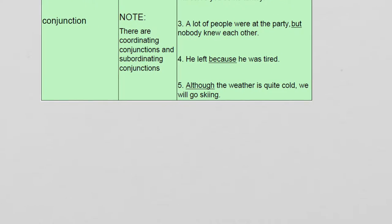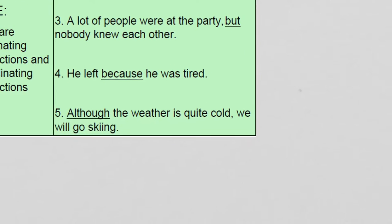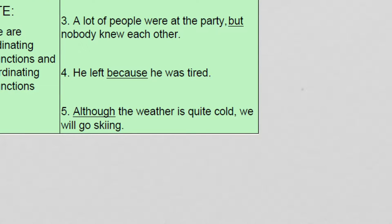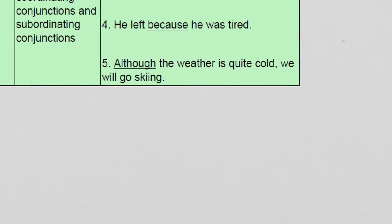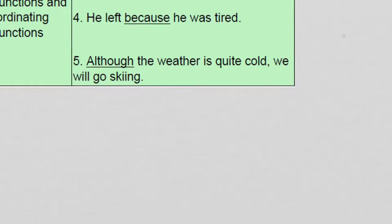Something to note about conjunctions is that there are coordinating conjunctions and there are subordinating conjunctions. Sentence three is another coordinating conjunction — two thoughts grouped together: 'A lot of people were at the party, but nobody knew each other.' For examples four and five, we have subordinating conjunctions. I will explain subordinating conjunctions a little more and share some common examples, though there's no way I can list them all.